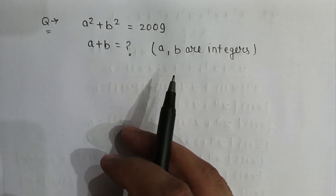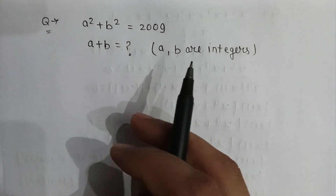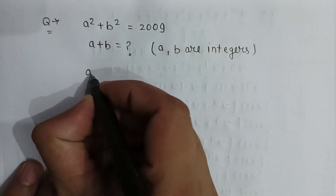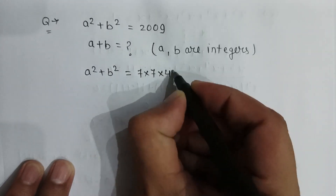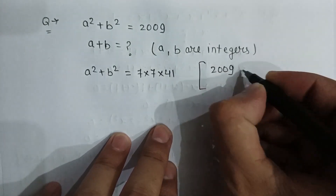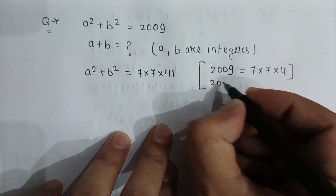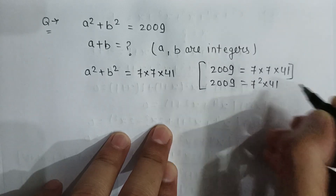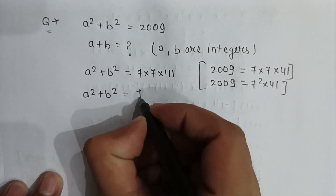The problem is a² + b² = 2009. Find the value of a + b if a and b are integers. We can write 2009 as 7 × 7 × 41, because 2009 = 7² × 41. So it becomes a² + b² = 7² × 41.